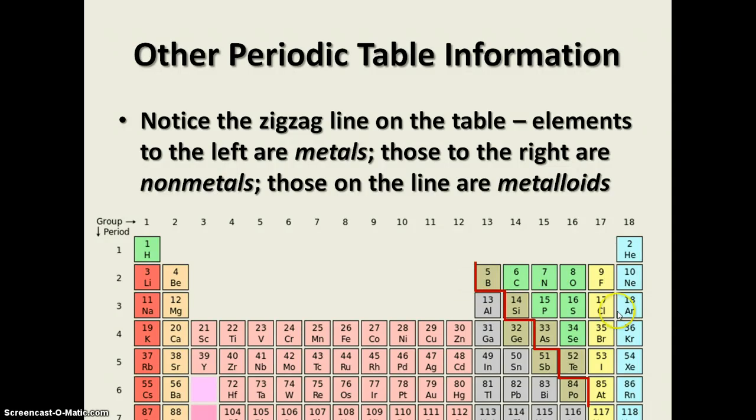Normally, in biology, we're going to be dealing a lot more with the nonmetals over here. And they have a tendency to form certain kinds of compounds, which we'll talk about in our next part of this unit. So we have the metals, the nonmetals, and then the metalloids here.